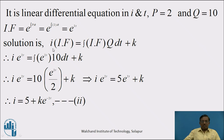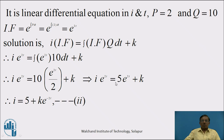The general solution of differential equation (1) is: I·(IF) = ∫(IF)·Q dt + K, where K is the constant of integration. Substituting the integrating factor and Q: I·e^(2T) = ∫e^(2T)·10 dt + K = 10·(e^(2T)/2) + K = 5·e^(2T) + K. Dividing both sides by e^(2T), we get: I = 5 + K·e^(−2T). Denote this as equation (2).